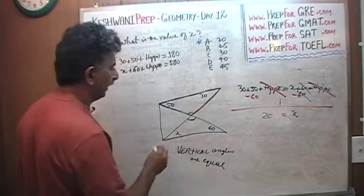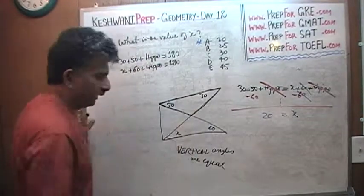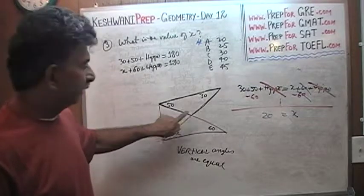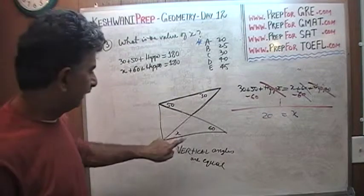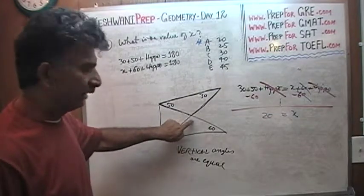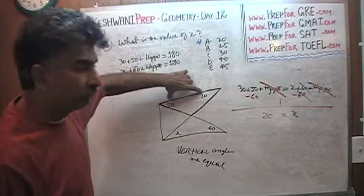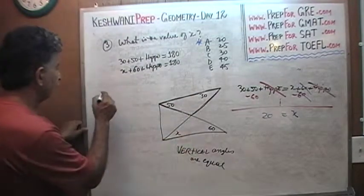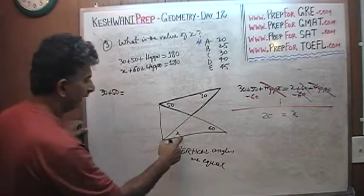Grown up way is to realize that these two angles are equal. And we know that sum of these three angles, 50 plus 30 plus this angle is 180. And sum of x plus 60 plus this angle is 180. And these two angles are equal. Therefore the sum of these two must equal the sum of those two. That's the more direct way. So therefore 30 plus 50 must equal x plus 60.